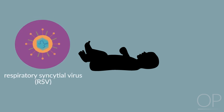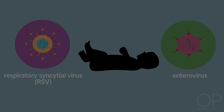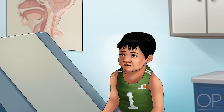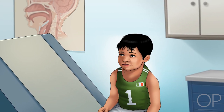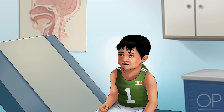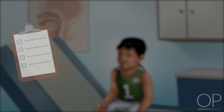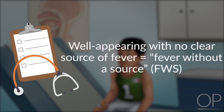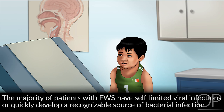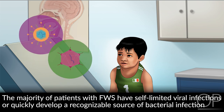However, common viral illnesses such as respiratory syncytial virus, RSV, or enterovirus remain the most common cause of fever in infants under 90 days of age. Unlike infants less than 3 months old, children ages 3 to 36 months old are epidemiologically at lower risk for serious bacterial illness and are more able to communicate their symptoms. Children in this age group who, after a thorough history and physical exam, are well-appearing but do not have a clear source of fever, are often identified as having fever without a source, or FWS. The majority of patients with FWS have self-limited viral infections or quickly develop a recognizable source of bacterial infection.